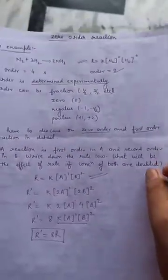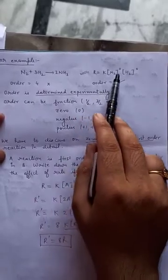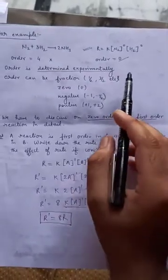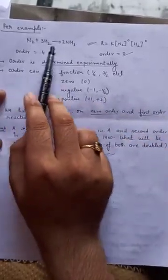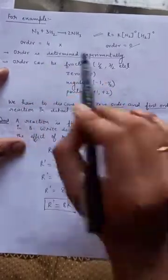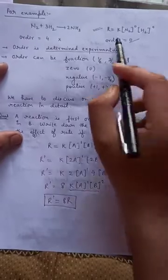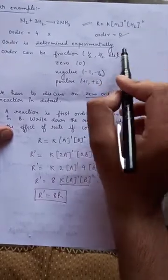Now let's consider an example: N2 plus 3H2 gives out 2NH3. The rate expression is given to you: R equals K N2 to the power 0 and H2 to the power 0. One of my students gave the answer that the order for this reaction will be 4. How? 1 plus 3 is 4, but this is wrong because we don't know the complexity of the reaction whether it is a single step or complex equation. We have to calculate the order by seeing the rate law. Here 0 plus 0 is 0.